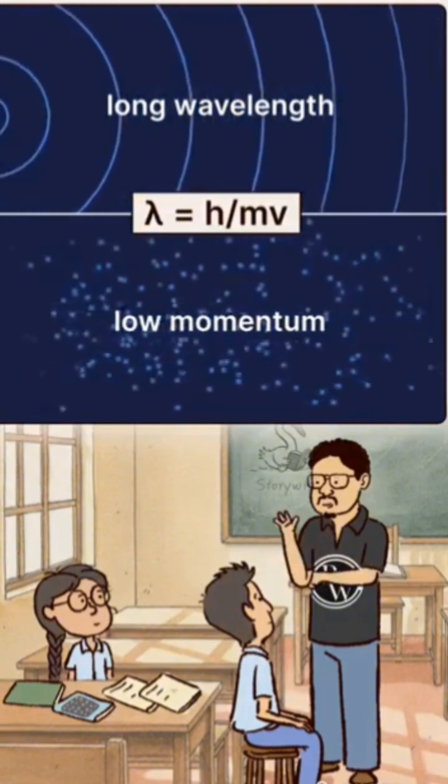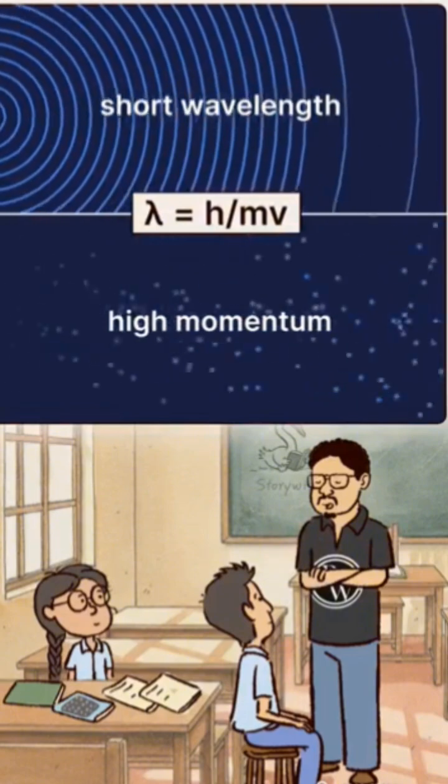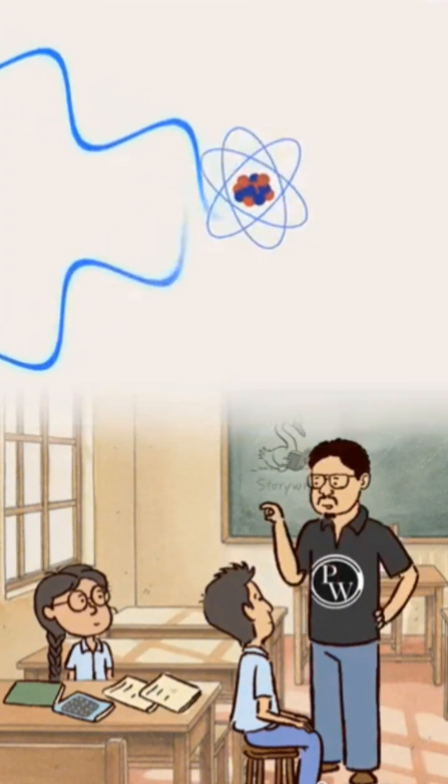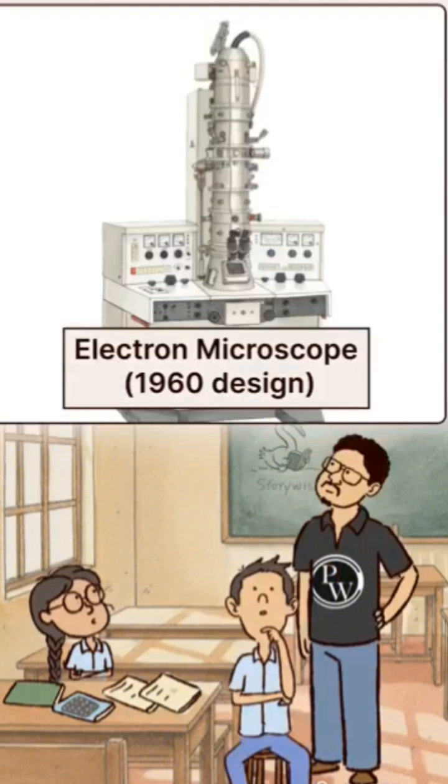And as momentum increases, the particle's energy increases and its wavelength decreases. In a way, by varying the electron's velocity, we can achieve virtually any wavelength. Shorter wavelengths are absolutely perfect for capturing images of atoms. This property is used in an electron microscope.